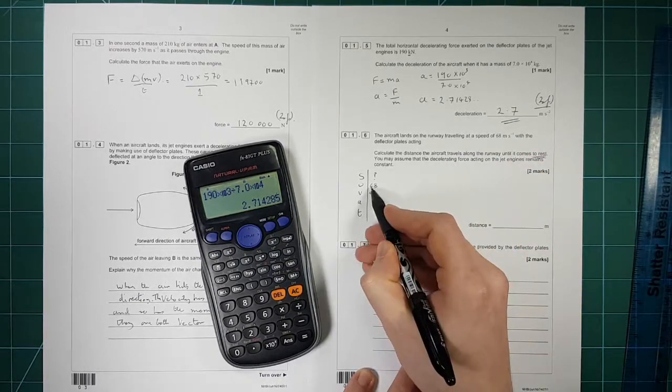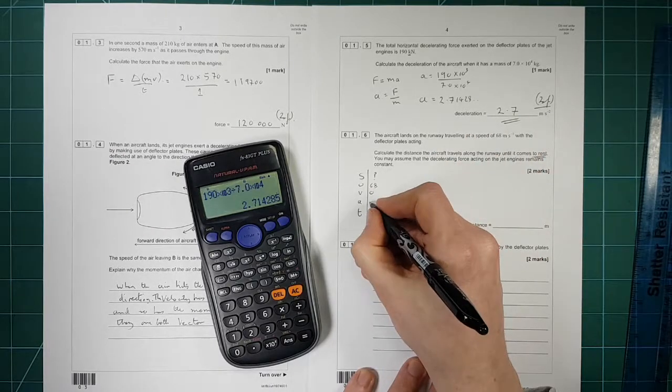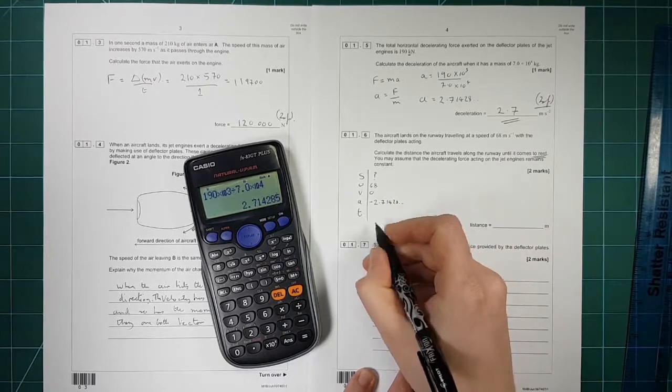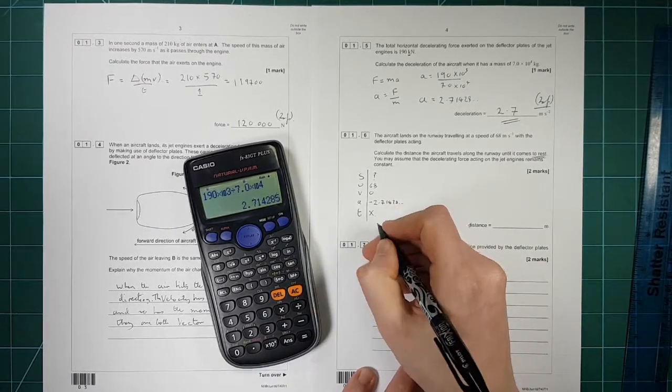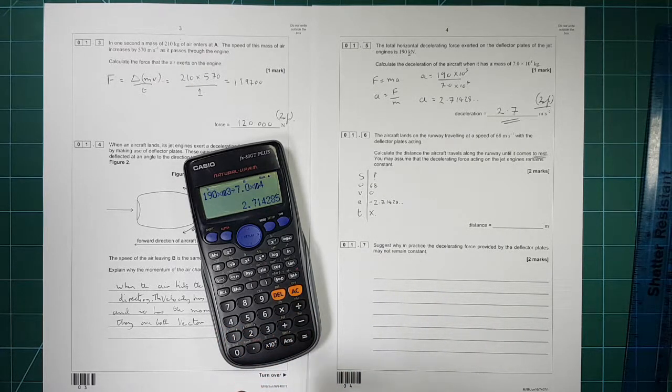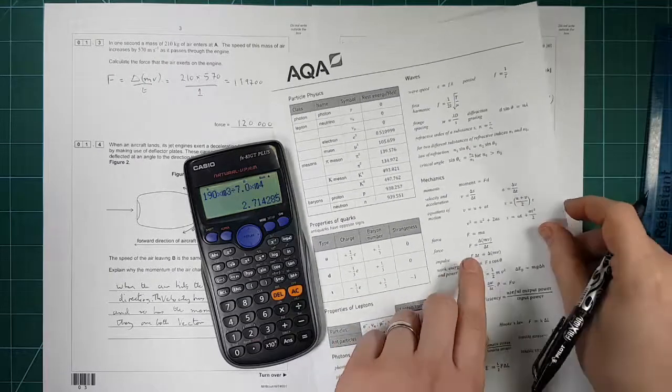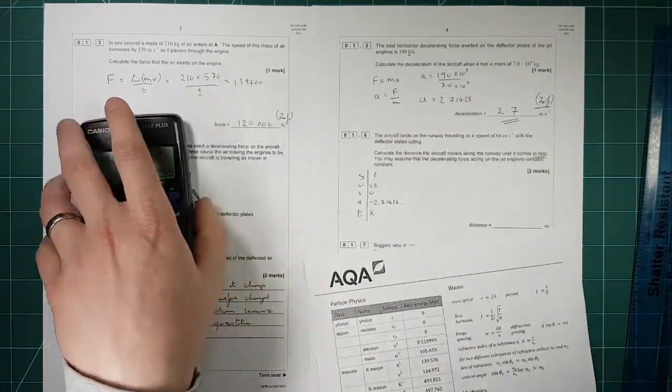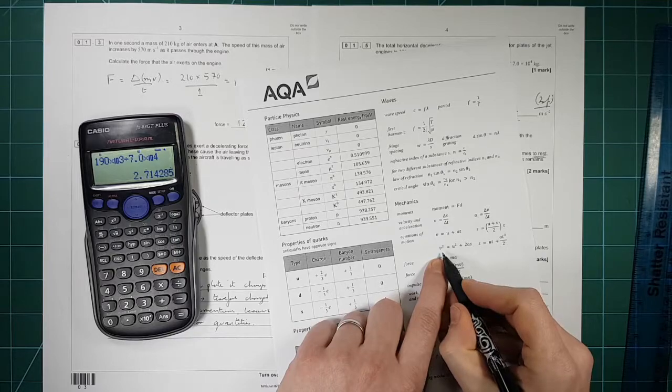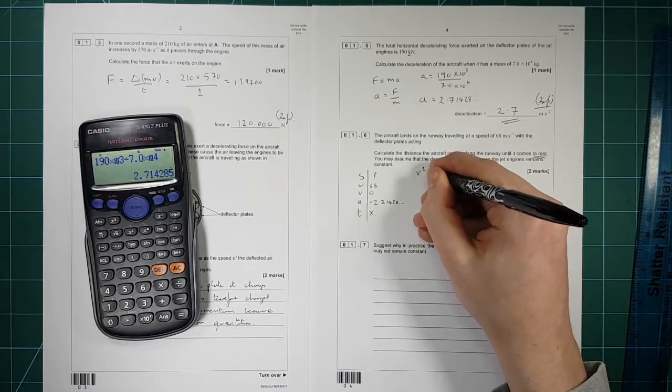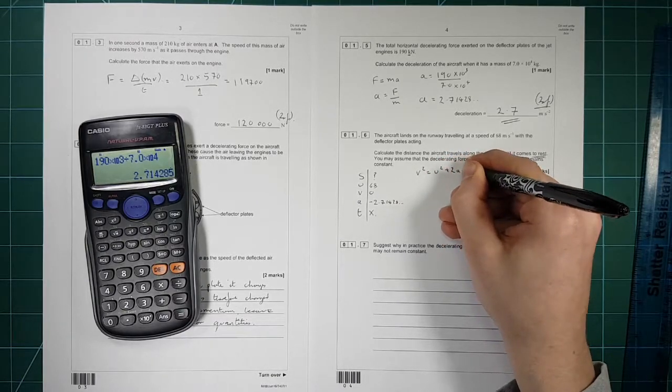So we're slowing down. So we need to put a minus in here. So it's minus 2.71428 dot dot dot. And the time, we don't care about the time. So we need to pick one of the SUVAT equations now. Which are located in this area of the formula sheet here. And the one that we don't care about is time. So we need to pick the one without time. So we need to pick that one there. So V squared equal to U squared plus 2AS.